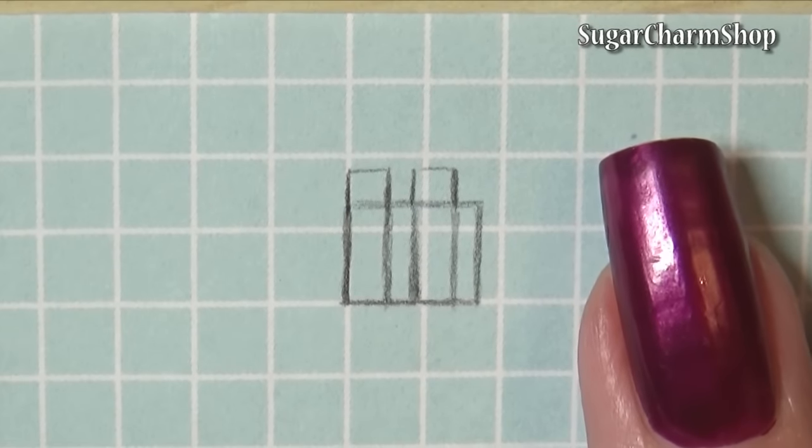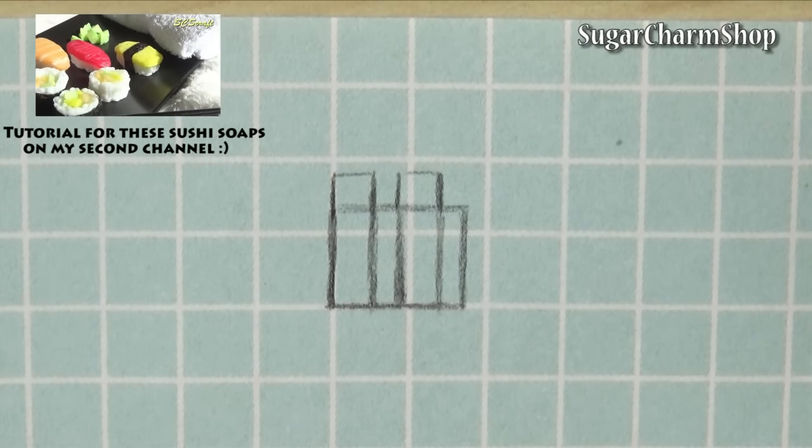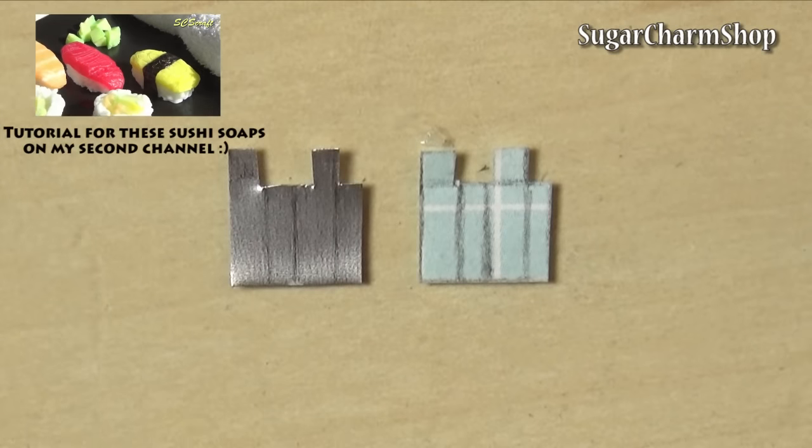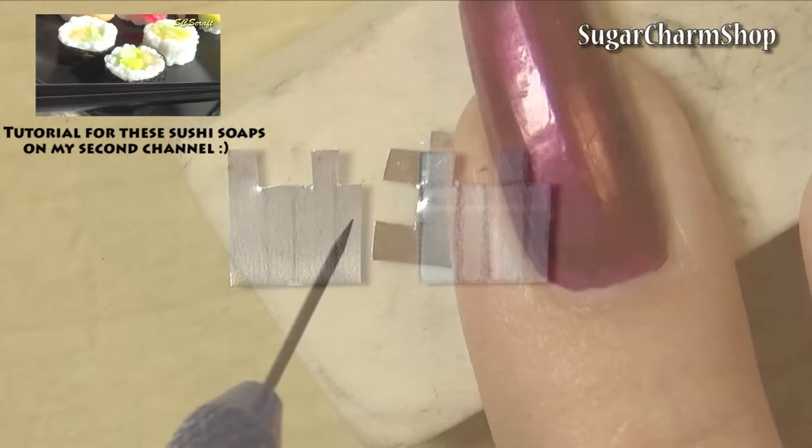First you're going to make a stencil for the main part of the dispenser, and this just has the short and wide sides, as well as two little attachments on the top. I then transferred that onto the middle from my tea light holder and cut that out.